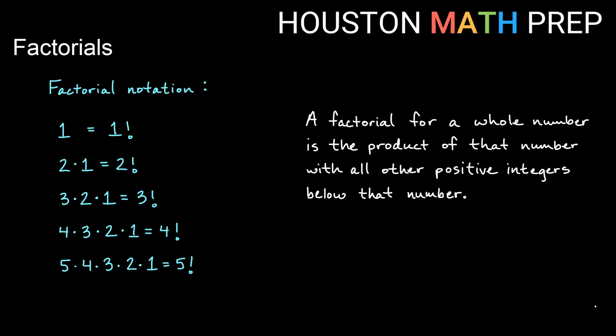Hey everyone, Houston Math Prep here. A factorial for a whole number is when you take the product of that number with all the other positive integers below that number, and we write factorials with an exclamation point after them.